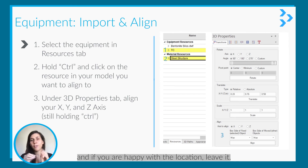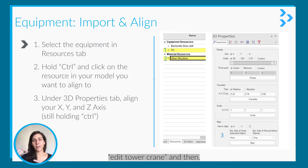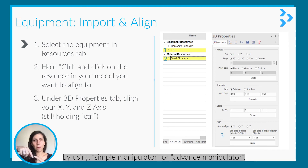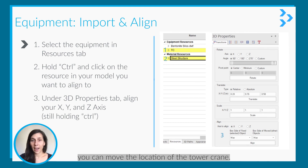If you are happy with the location, leave it. If you're not happy, just right-click, edit the tower crane, and then by using the simple manipulator or advanced manipulator, you can move the location of the tower crane.